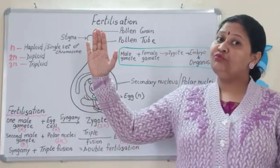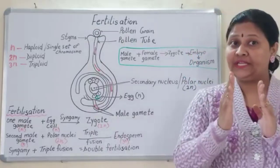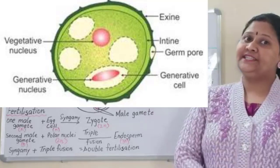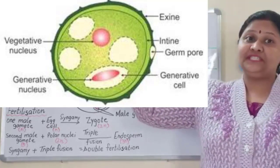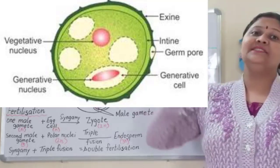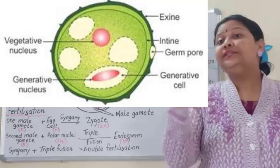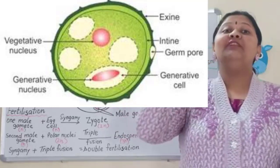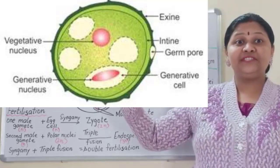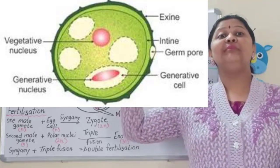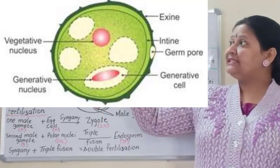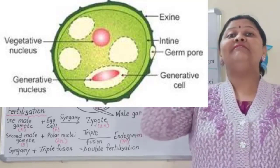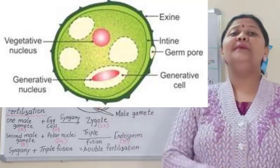Now coming to the structure of pollen grain. Inside the pollen grain, you can see the vegetative cell and the generative cell. Inside the vegetative cell is the vegetative nucleus, and inside the generative cell is the generative nucleus. The vegetative cell helps in the development of the pollen tube. The generative cell produces the male gametes.